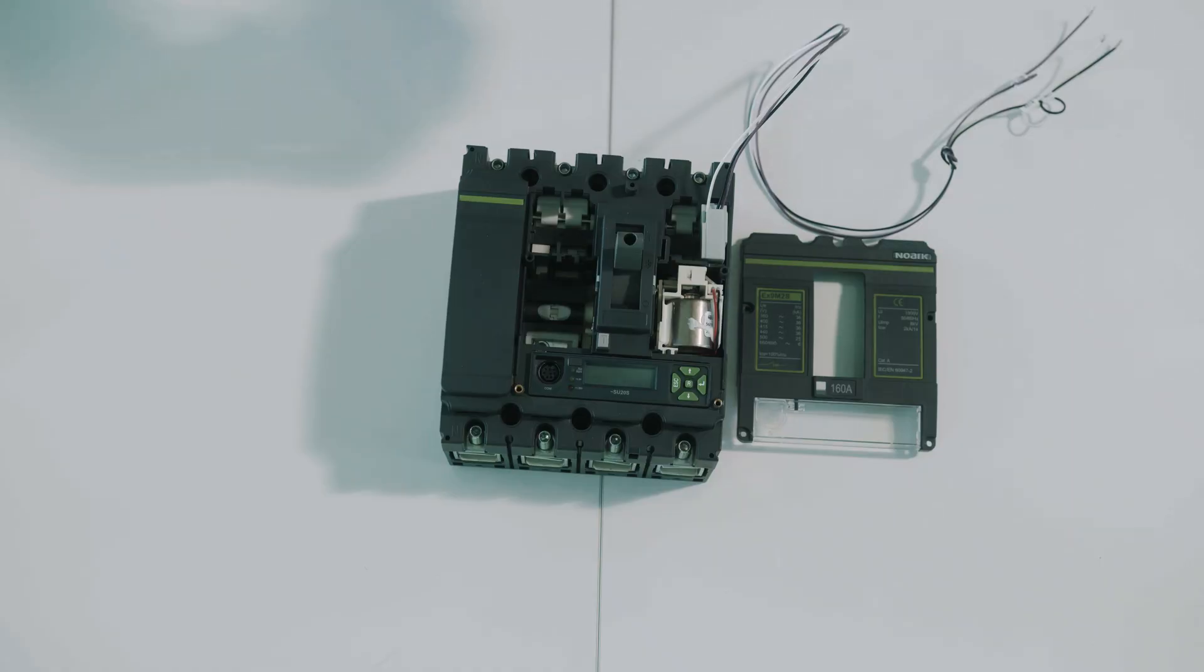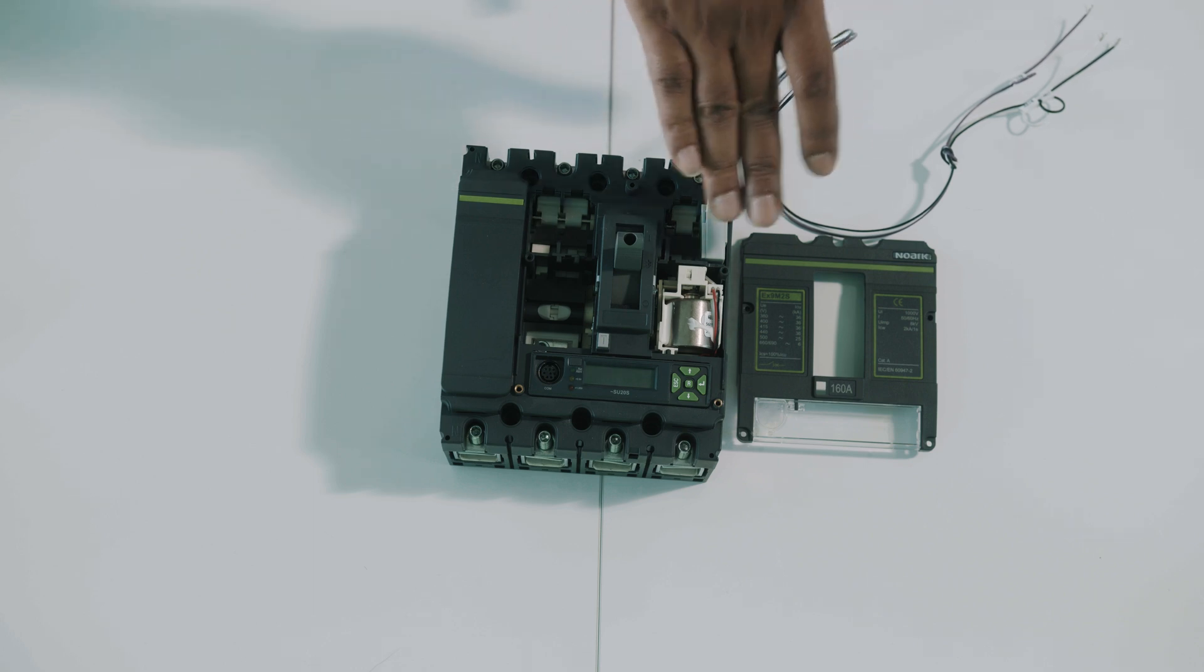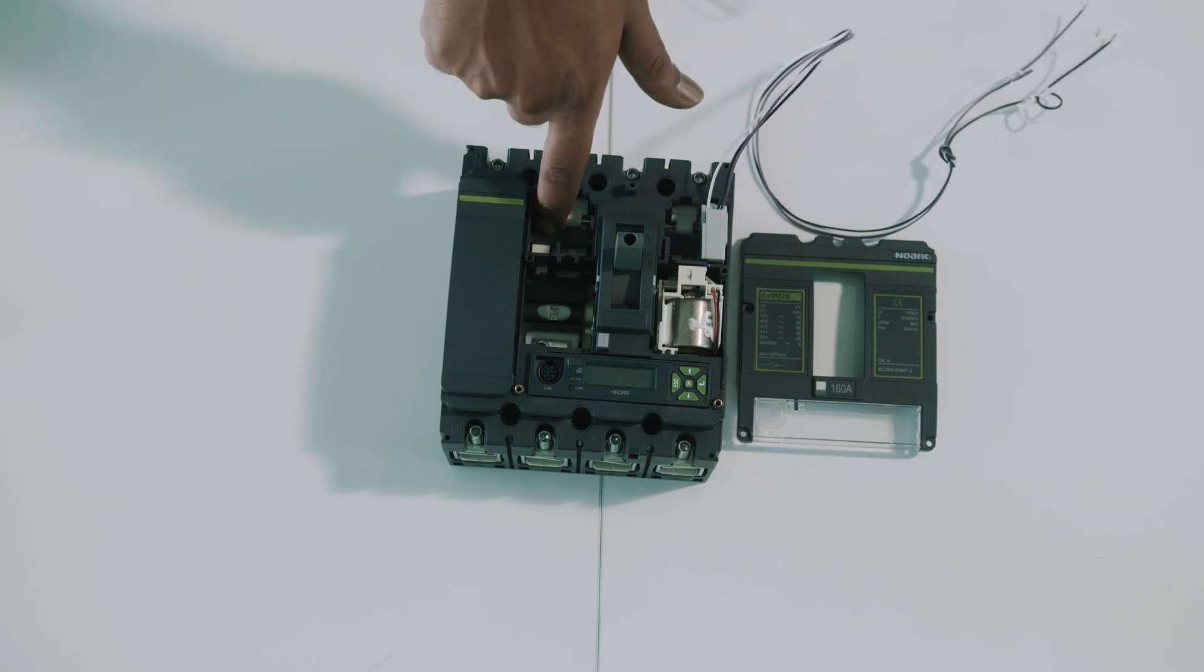In the case of the EX9M2 frame size we will be able to place up to two auxiliary contacts inside of the circuit breaker. Again please be careful with the naming or the labeling inside of the circuit breakers.